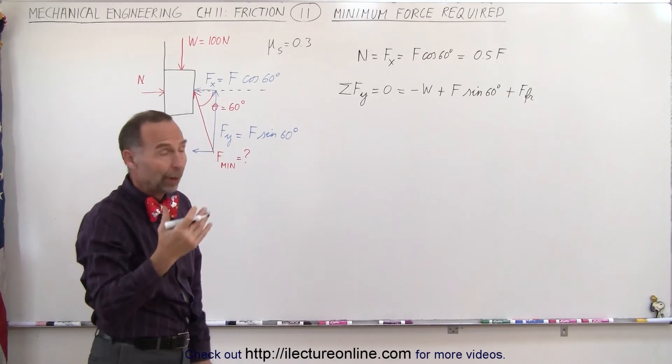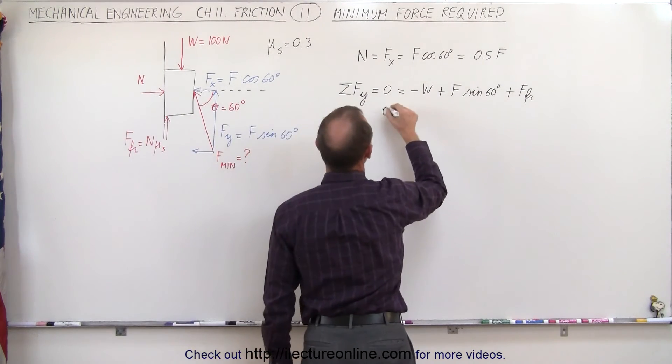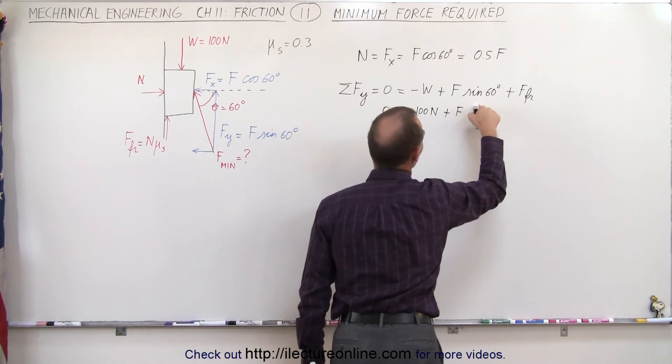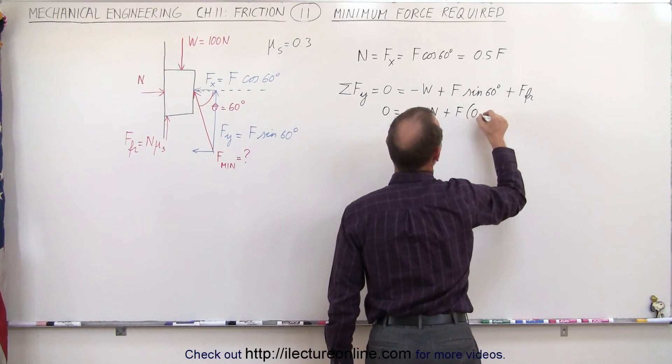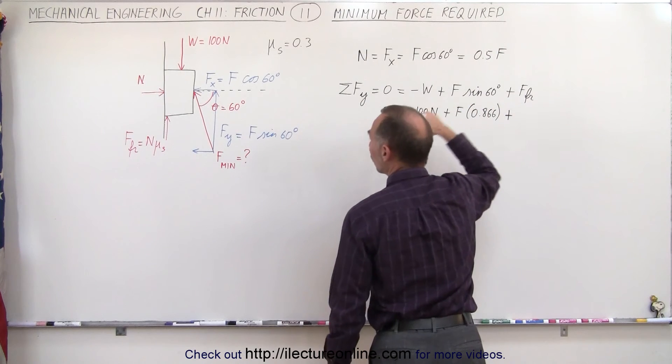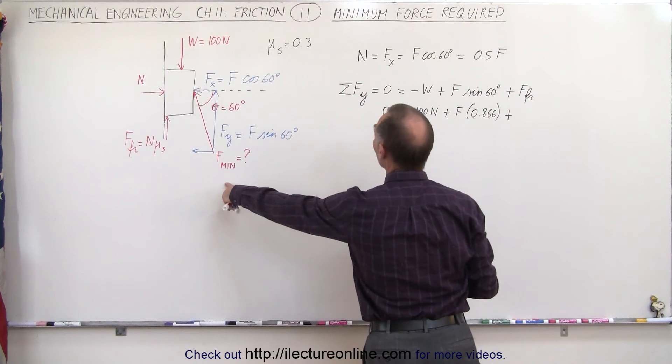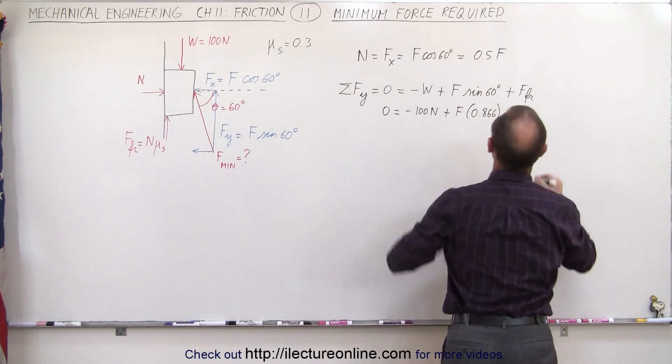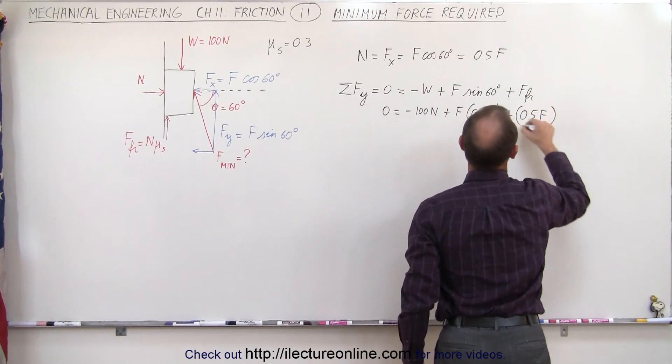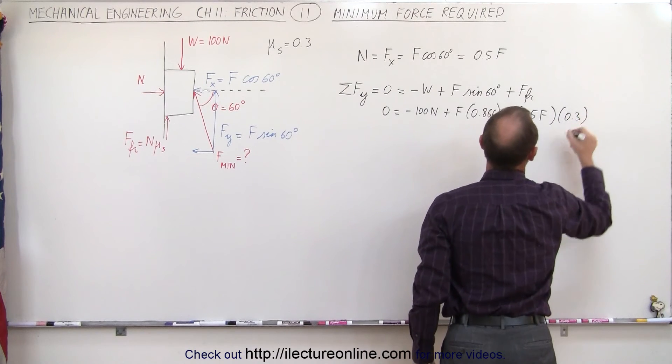So let's write out what these are equal to. Zero equals minus 100 newtons plus the force times the sine of 60 degrees, which is 0.866, plus the friction force, which is the normal force times μ sub s. And the normal force is 0.5F, so that would be 0.5F times the coefficient of friction, which is 0.3.